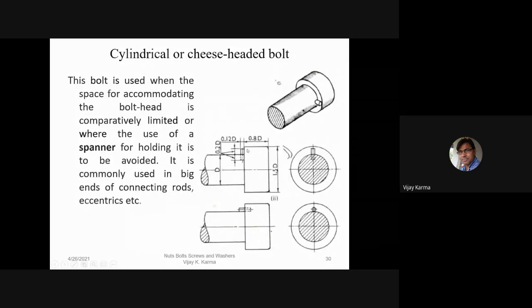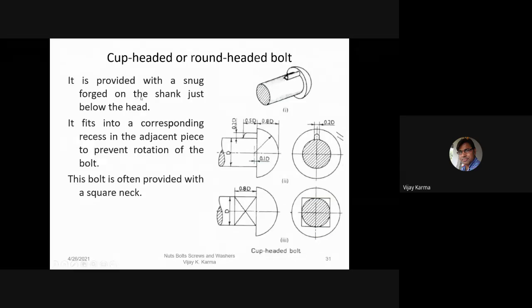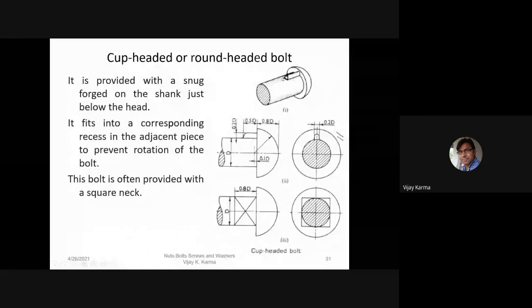The cup-headed or round-headed bolt has a cup-shaped head. It is provided with a snug on the shank just below the head, which fits into a corresponding recess in the adjacent piece to prevent rotation of the bolt. This bolt is often also provided with a square neck.